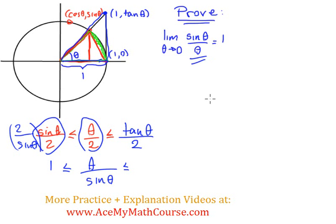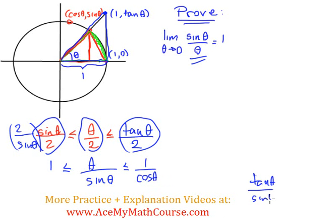We're getting closer to what we're looking for. Over here we have tan(θ)/2. If we multiply it by 2/sin(θ), the 2's cancel and we get tan(θ)/sin(θ). And tan(θ)/sin(θ) is just 1/cos(θ), because tan(θ) = sin(θ)/cos(θ), and dividing by sin(θ) gives 1/cos(θ).